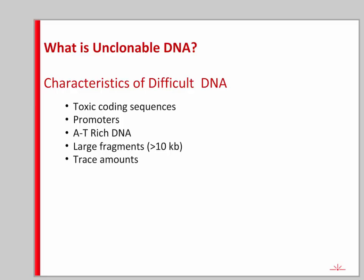What is unclonable DNA? There are several characteristic types that are typically problematic. First is toxic coding sequences — if your DNA is making something that kills the bacteria you're cloning it into, you won't get it easily. Promoters can be tough because they interfere with vector functions. AT-rich DNA is a very common problem. Large fragments can be difficult depending on length and AT content. Trace amounts of DNA are always tough to clone, but everything that clones difficult DNAs also works well with trace amounts, depending mostly on the quality of the vector prep.